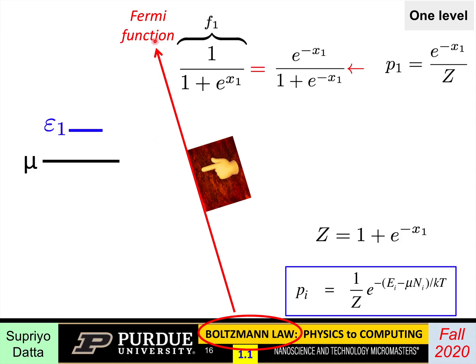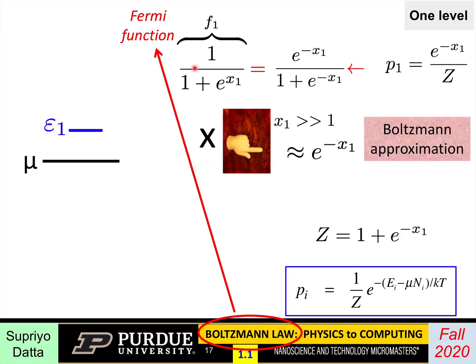Sometimes the Fermi function is approximated as e to the power minus x_1 — that is, if x is much greater than one, you can drop the one and get e to the power minus x_1. This is often called the Boltzmann approximation, used extensively in semiconductor device courses. But I want to stress: the Boltzmann law we discuss in this course is not this approximation. The Boltzmann approximation is just an approximation to the Fermi function; the Boltzmann law is the general law from which the Fermi function is just one special case.